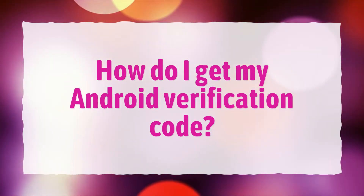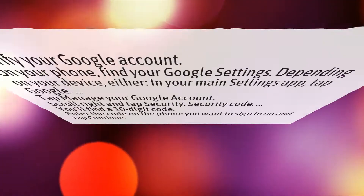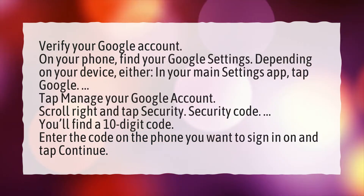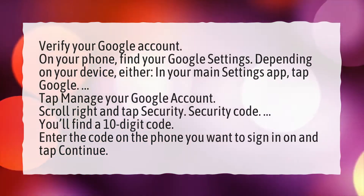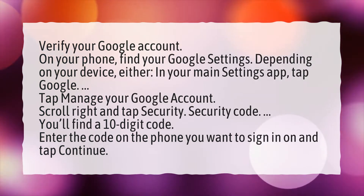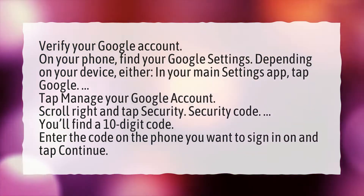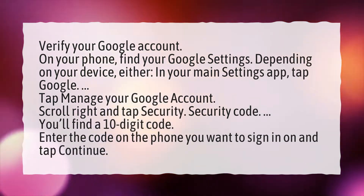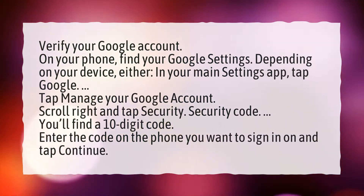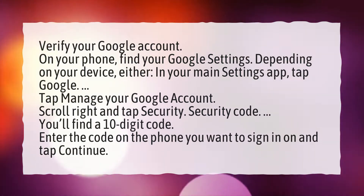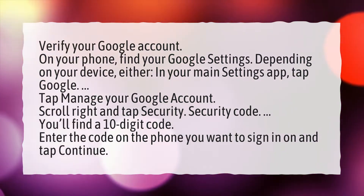How do I get my Android verification code? Verify your Google account. On your phone, find your Google settings. Depending on your device, either in your main settings app, tap Google. Tap Manage your Google Account. Scroll right and tap Security. Under Security code, you'll find a 10-digit code. Enter the code on the phone you want to sign in on and tap Continue.